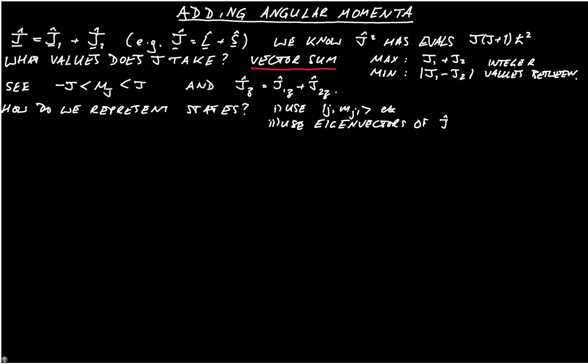And both of those are legitimate choices. In fact, what we're going to see is how to convert between the two. So for option one, we might, for instance, choose j1, mj1, j2, mj2. And I just want to emphasize this is actually a tensor product, not a regular product, but I'm not going to go into any more detail.